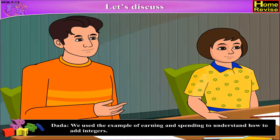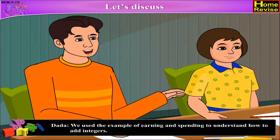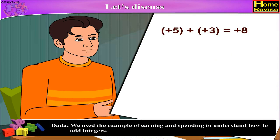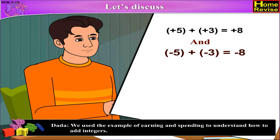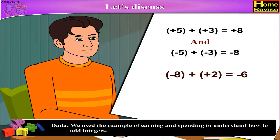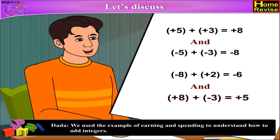We use the example of earning and spending to understand how to add integers. For example: plus 5 plus plus 3 is equal to plus 8; minus 5 plus minus 3 is equal to minus 8; minus 8 plus plus 2 is equal to minus 6; and plus 8 plus minus 3 is equal to plus 5.